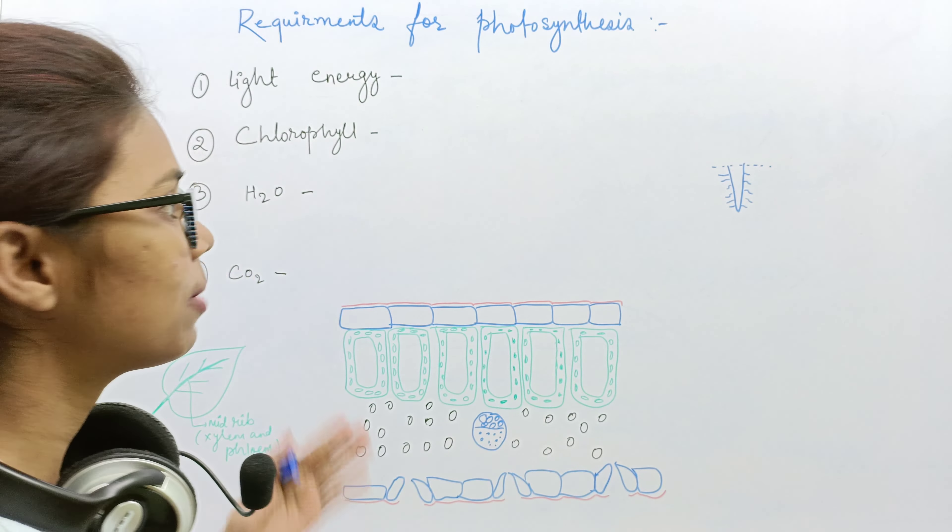The next requirement is H2O — water. The water requirement is fulfilled from the soil, because water is present in the soil. Through the roots — the plant's root is in the soil where H2O molecules are present. From the main root, very tiny root hairs arise. These root hairs absorb water molecules through simple diffusion and transport it throughout the plant's body. So the water requirement is fulfilled from the soil.